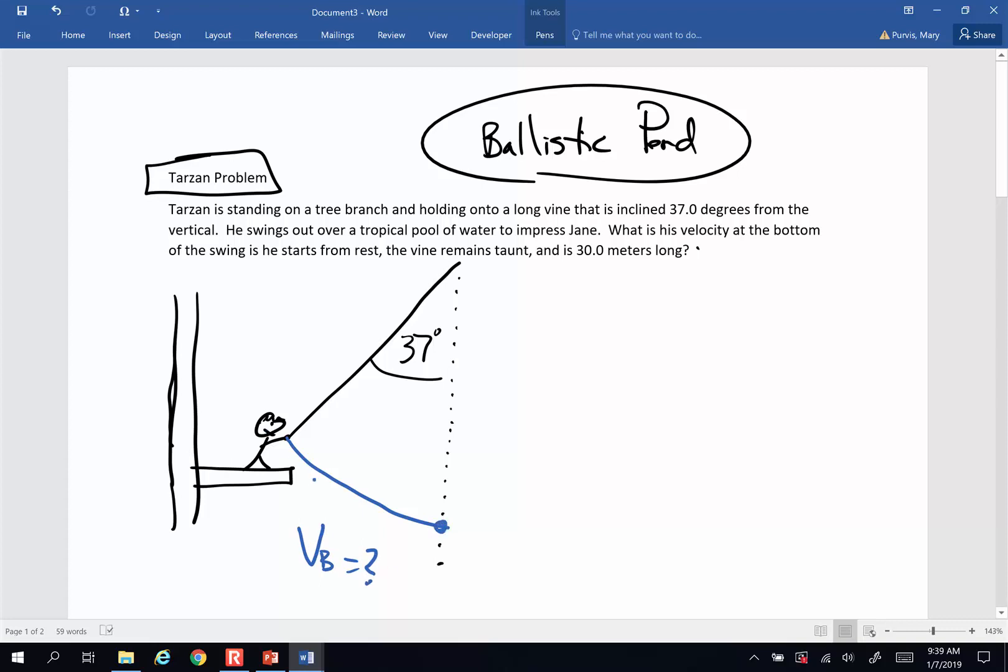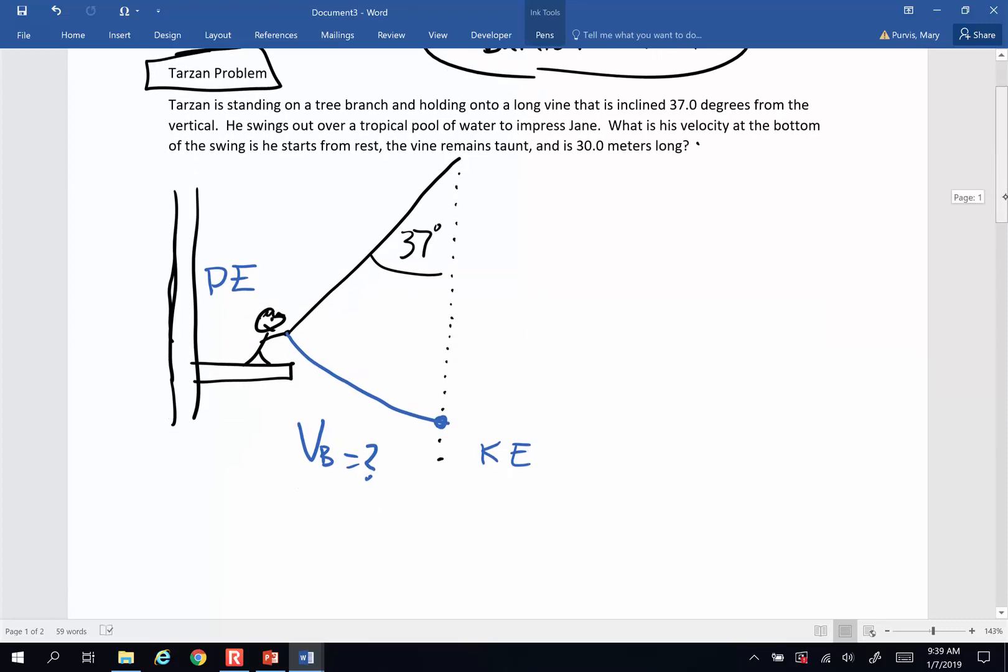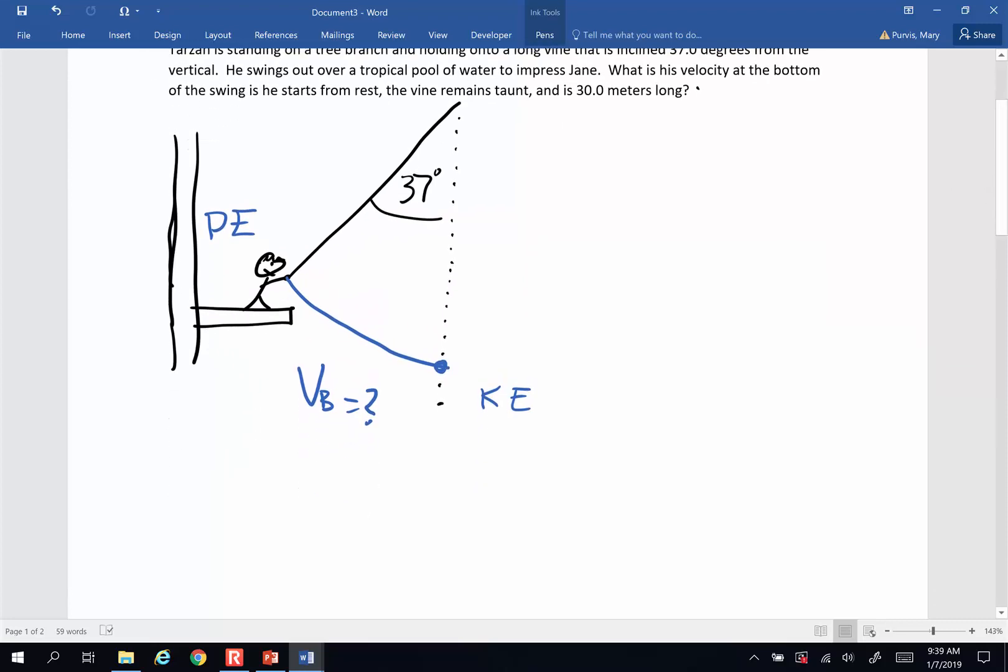When the path of travel gets complicated, that's a good time to use energy. So I am going to say the potential energy that Tarzan had at the top is going to be equal to the kinetic energy that he has at the bottom. So let's start to set that up.